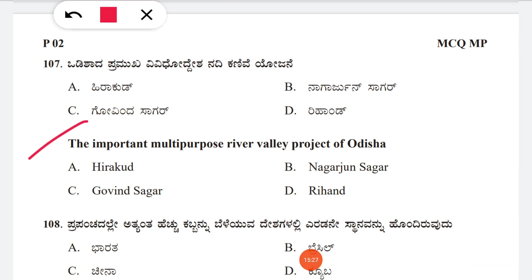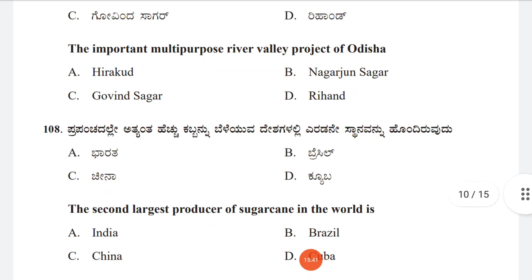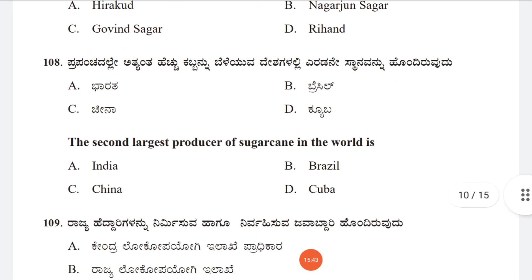Question 107: The important multi-purpose river valley project of Odisha — option A: Hirakud, B: Nagarjuna Sagar, C: Govind Sagar, D: Rihand. The correct answer is A, Hirakud.